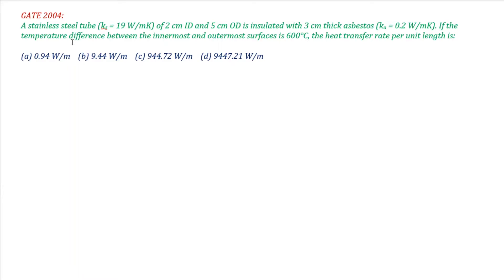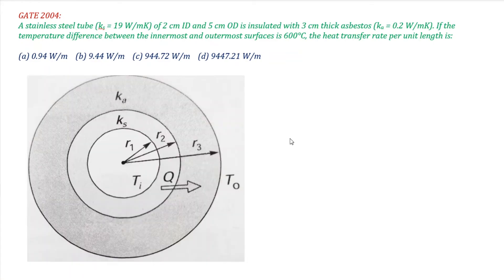Next question is Gate 2004: there is a stainless steel tube with inner diameter ID = 2 cm and outer diameter OD = 5 cm, so the thickness is 3 cm. The temperature difference between the innermost and outermost surface is 600°C. We need to find the heat transfer rate per unit length. Converting: R1 = 0.01 m, R2 = 0.025 m. Thermal conductivity of stainless steel is 19 W/mK, and the insulation thermal conductivity is 0.2 W/mK.